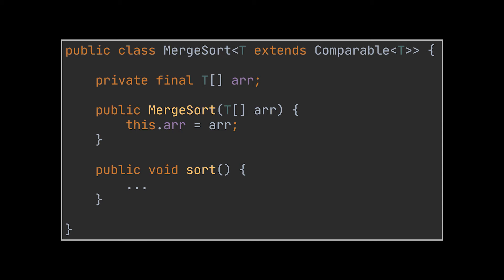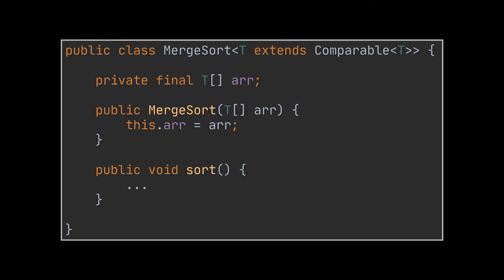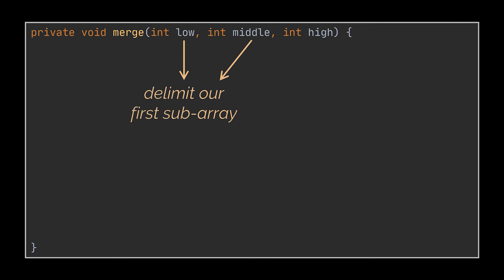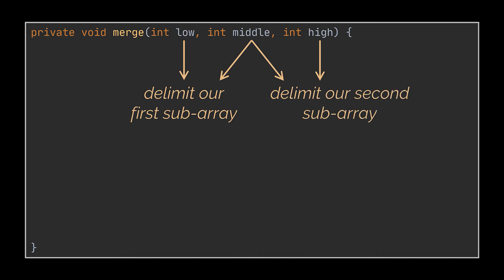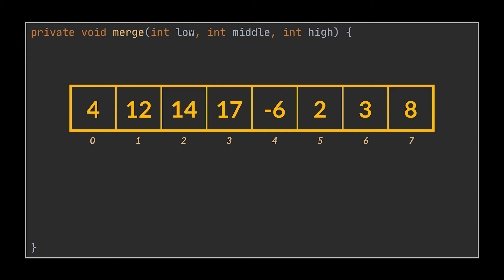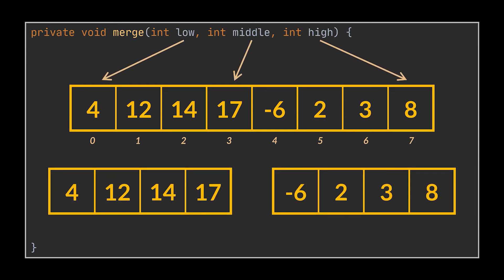Before diving into the actual sort method, let's implement the merge logic inside a helper method. This method will iterate simultaneously over two subarrays and merge them into a single sorted array. The merge method takes three integer indices as arguments — these are the delimiters of our subarrays. The indices low and middle delimit the first subarray, whereas the second subarray is extracted using the indices middle to high. For example, if we pass low=0, middle=3, and high=7, we get the two four-element subarrays ready to be merged.